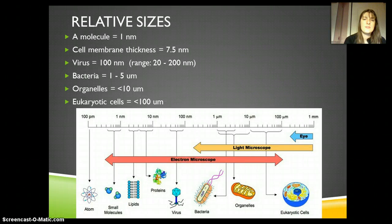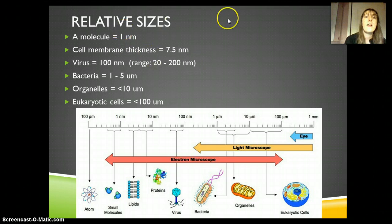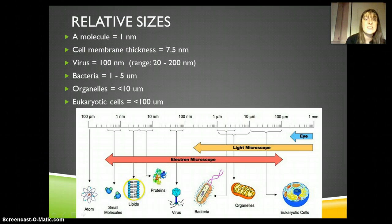When we're talking about those different sizes, that allows us to compare different things. The average size of a molecule is about a nanometer or smaller — these are super, super small. Nanometers are 10 to the negative 9. If I'm looking at the cell membrane thickness, that's also ridiculously small, about 7.5 nanometers on average.